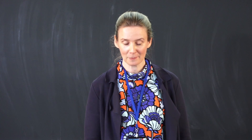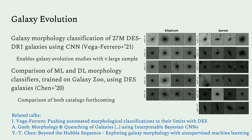Moving on to regular galaxies — there will be several talks about this here — describing galaxy morphology classification for 27 million DES galaxies using CNNs and also other classifiers, which will form a fantastic basis for more detailed studies of galaxy evolution as a function of environment.